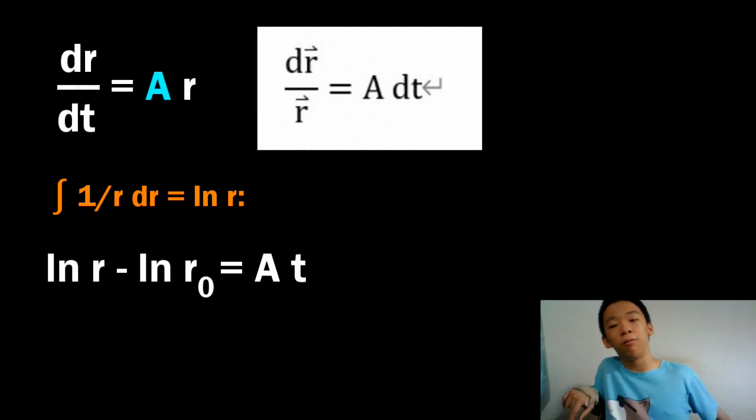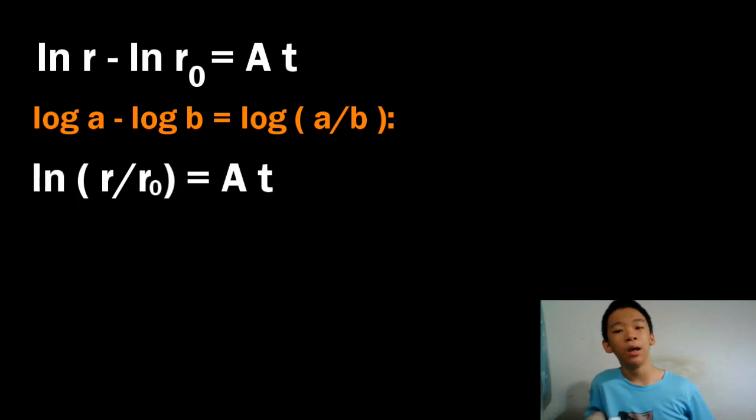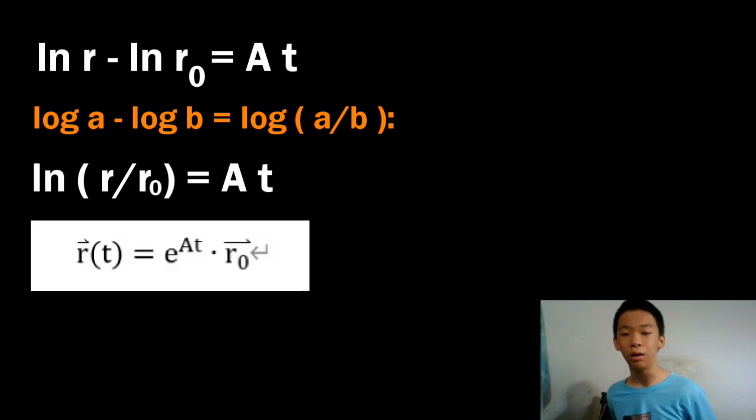Integrate both sides. The antiderivative of 1 over r is natural log of r, so we end up with natural log of r from r0 to r equals natural log of r minus natural log of r0 equals a t. Using the log property that natural log of a minus natural log of b equals natural log of a over b, we get that the natural log of r over r0 equals a t. Exponentially both sides, and we get that r of t is e to the a t times r0.